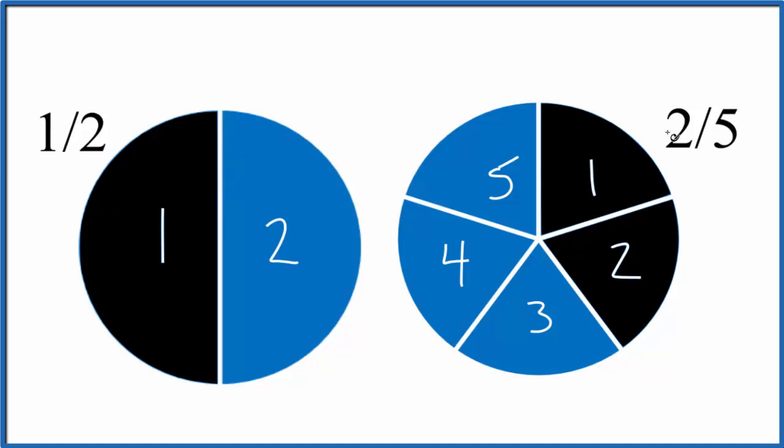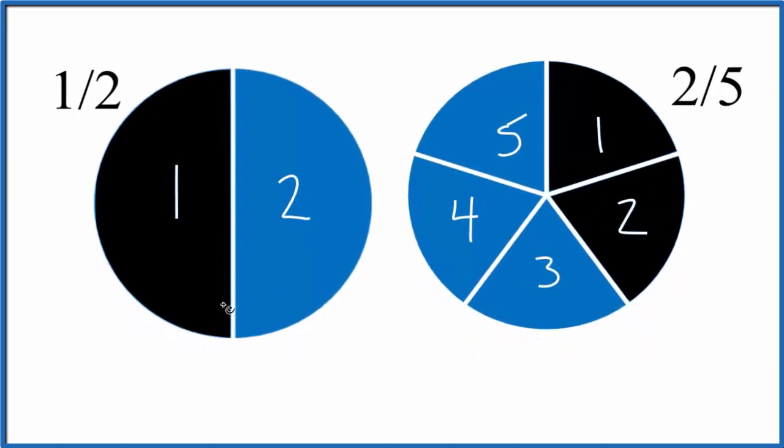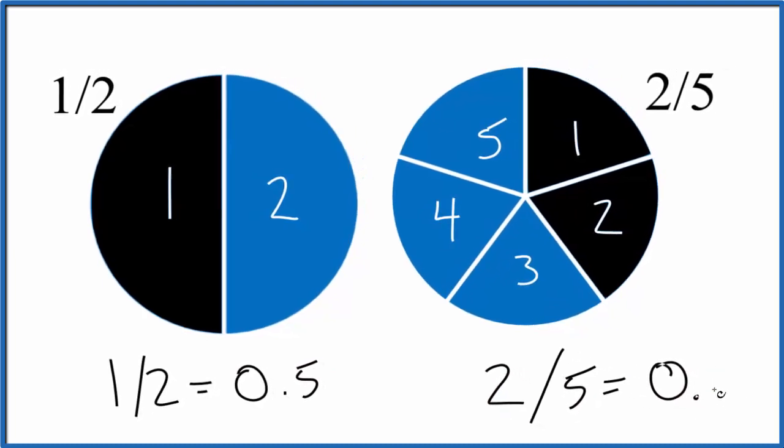We could also convert these to decimals, one divided by two and two divided by five, then we can compare the decimals. So one divided by two, that's 0.5. Two divided by five, that equals 0.4.